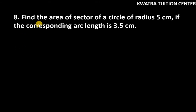It says find the area of sector of a circle of radius 5 cm. Let's write what is given to us. R is 5 cm. If the corresponding arc length is 3.5, L is given to us as 3.5 cm.